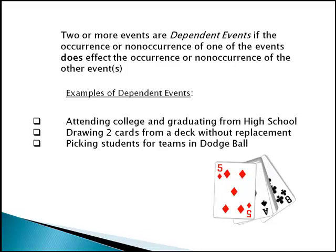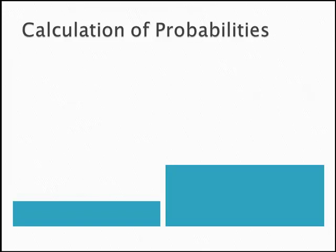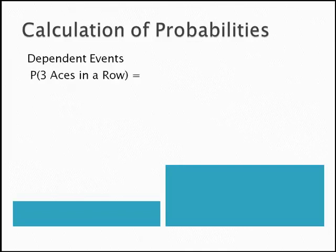First, let's look at dependent events. Think about drawing cards from an ordinary deck of 52. I want to know the probability that if I select three cards from a deck and don't put them back after each draw, what's the probability that I get three aces in a row?